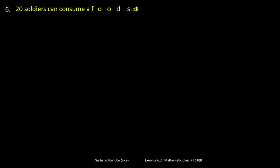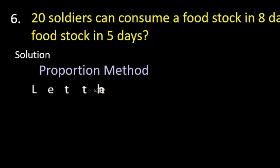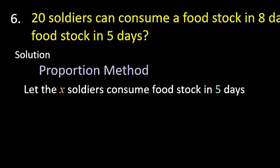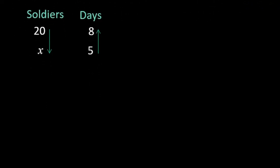Question: 20 soldiers can consume a food stock in 8 days. How many soldiers will consume the same food stock in 5 days? By proportion method: suppose x soldiers consume the food stock in 5 days. We write soldiers and days: 20 soldiers consume food in 8 days; in 5 days, x soldiers consume it. Days decrease from 8 to 5, so arrow direction is from 5 to 8. When soldiers increase, food stock decreases, so x is greater than 20.